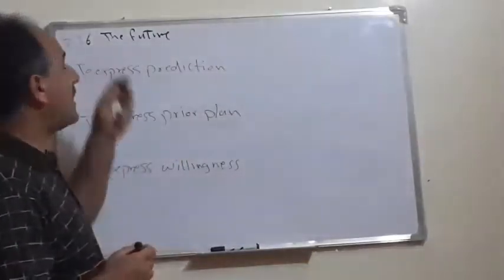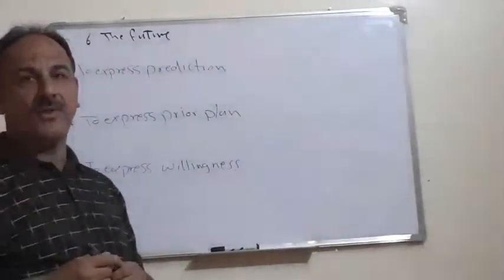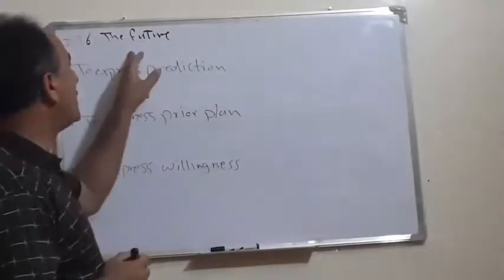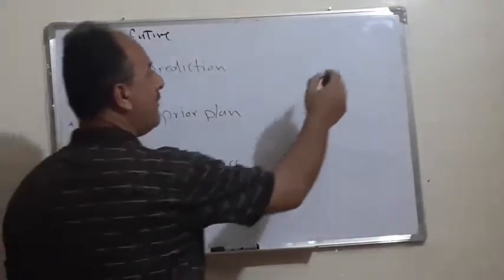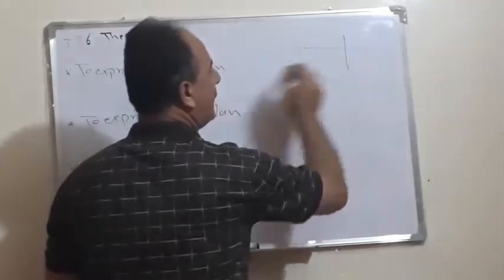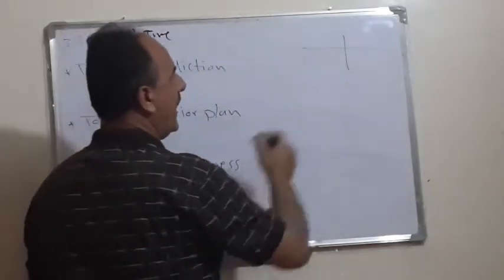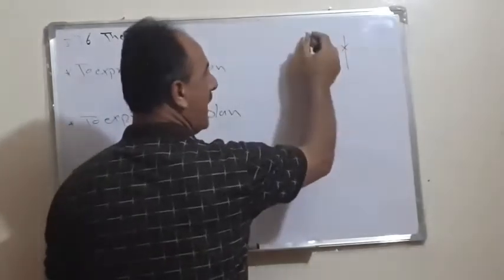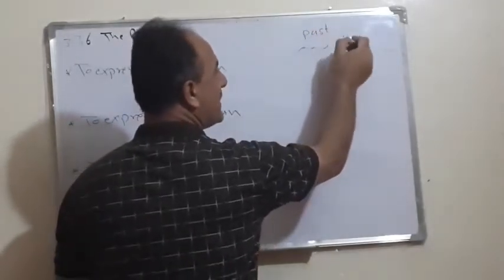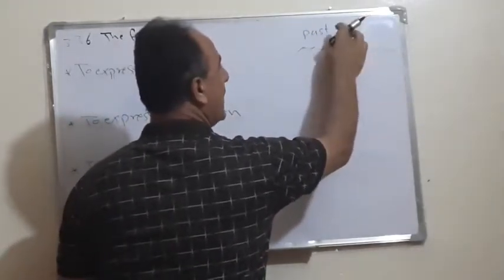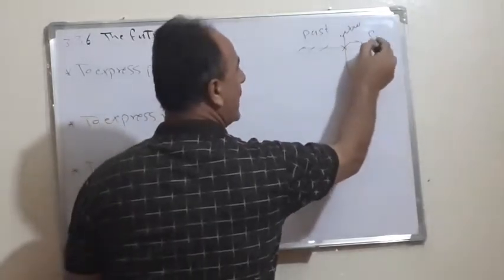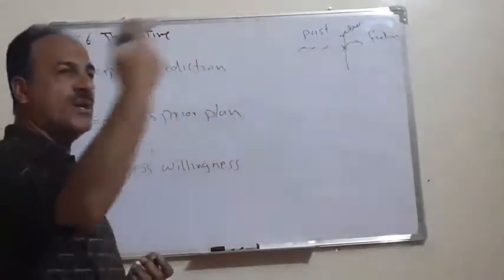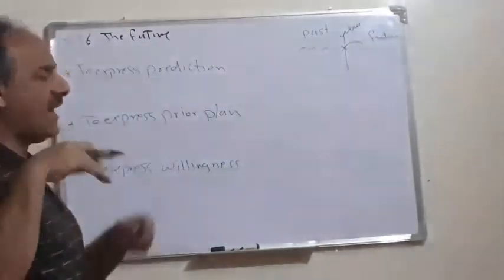In this section, section 3.36, we have the last tense, which is the future. If you remember the tense timeline, this period is the past, this is now or the present, and what comes after is what we call the future — what is coming, not behind or not now.